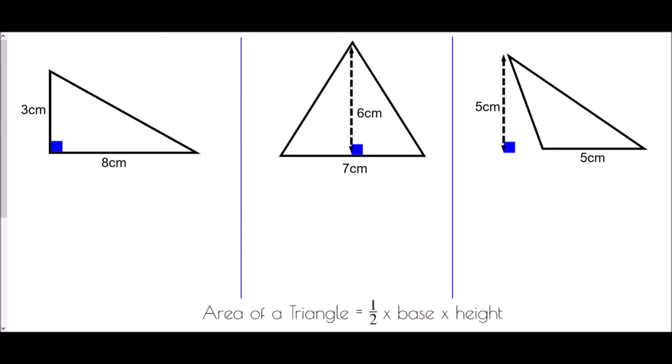We're going to look at three different examples of different types of triangles and find their areas. The first one is a right angle triangle — you'll notice the little square in the corner. We've got the formula at the bottom: area of a triangle equals a half times base times height. In this case the base is at the bottom, which is 8, and the height is 3.